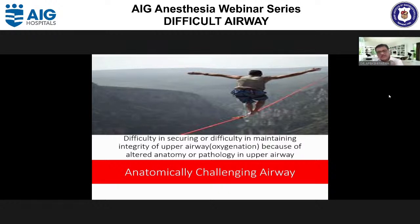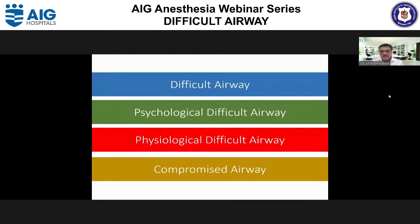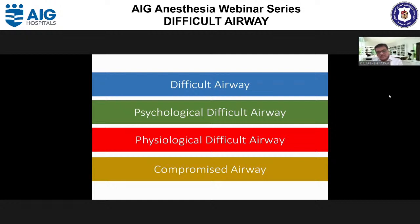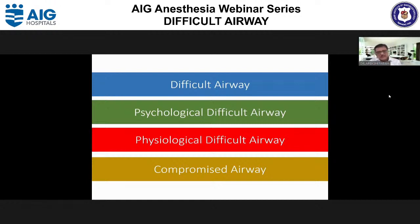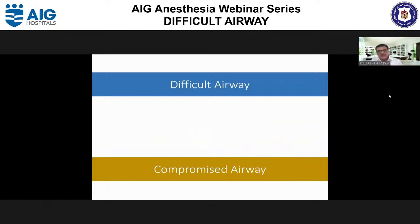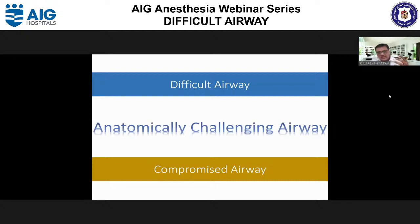There are several types to consider under anatomically challenging airway. There is the difficult airway, the psychological difficult airway where psychological pressure impairs the process of airway management, and the physiological difficult airway where physiological derangements during management create hypotension, hypoxia, and intubation-related complications — which Dr. Sheila Maitra will describe in the next lecture. Another category is the compromised airway.